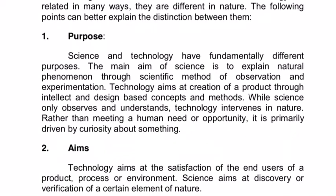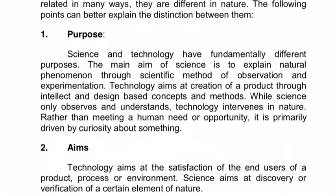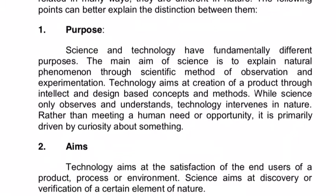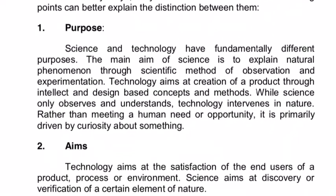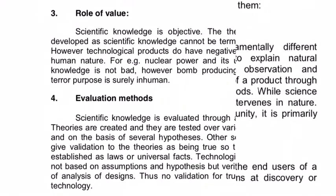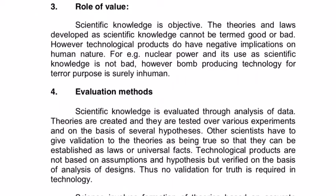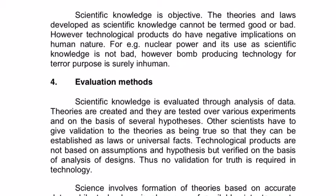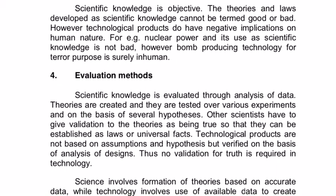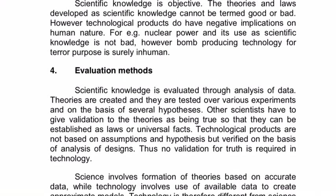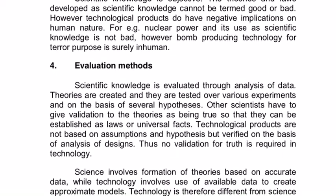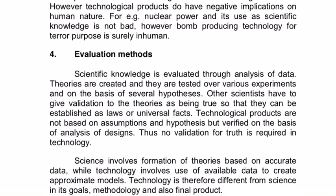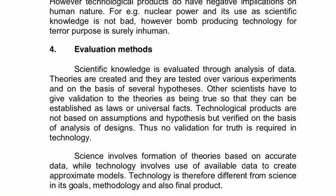Second, aims. Technology aims at the satisfaction of the end users of a product, process or environment. Science aims at discovery or verification of a certain element of nature. Third, role of value. Scientific knowledge is objective — the theories and laws developed as scientific knowledge cannot be termed good or bad. However, technological products do have negative implications on human nature. For example, nuclear power and its use as scientific knowledge is not bad; however, bomb-producing technology for terror purposes is surely inhuman.